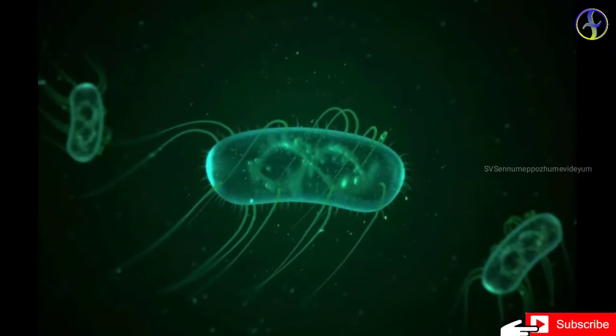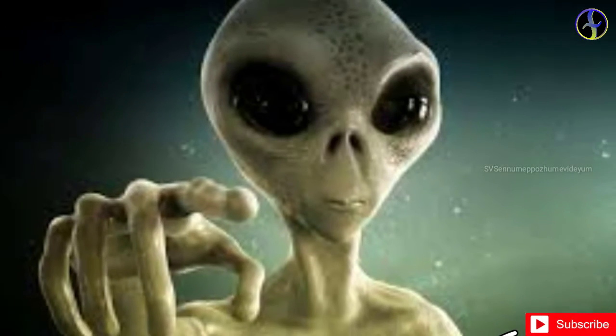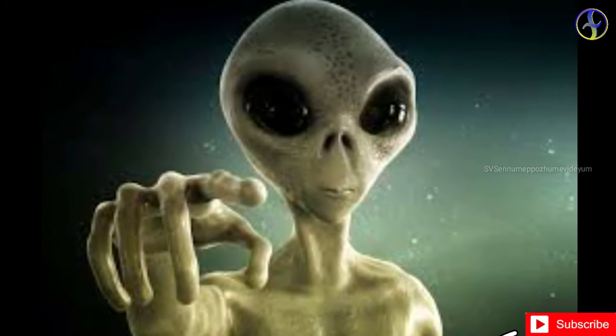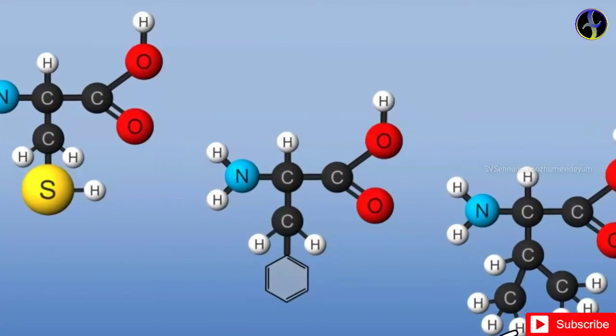The fourth type is protopanspermia. This involves intelligent life and living organisms. It's a mechanism of how life could be distributed across the cosmos.